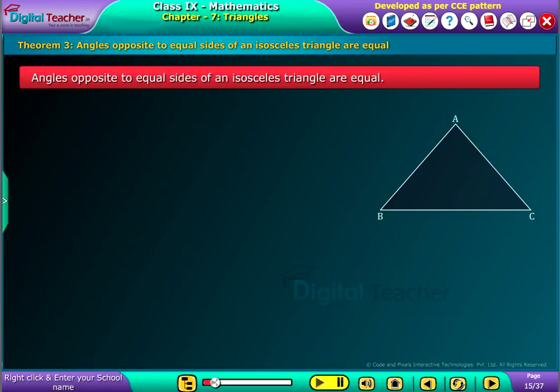Theorem: Angles opposite to equal sides of an isosceles triangle are equal. Given: Triangle ABC is an isosceles triangle in which AB is equal to AC.